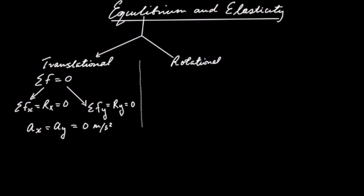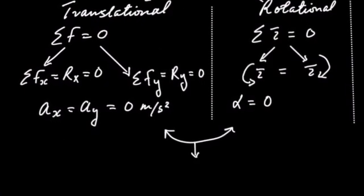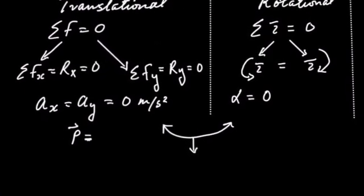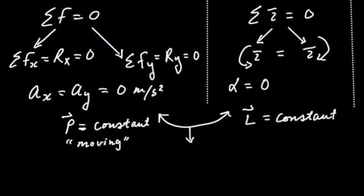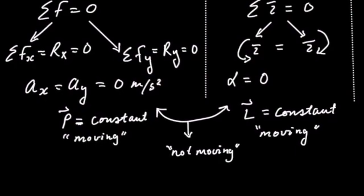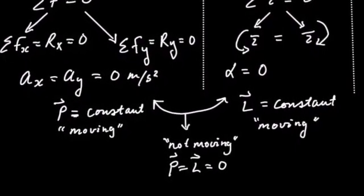When we talk about rotational equilibrium, we're considering the torques and saying the sum of the torques must be equal to zero, meaning the torques turning the object anti-clockwise must be equal to those turning it clockwise. We can also note that for both translational and rotational equilibrium, the momentum will be constant because the velocities are not changing.